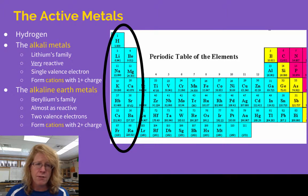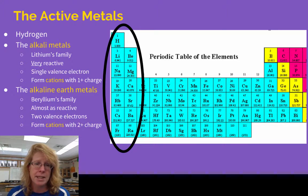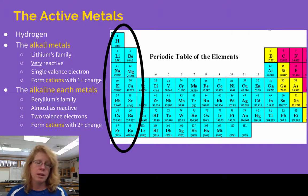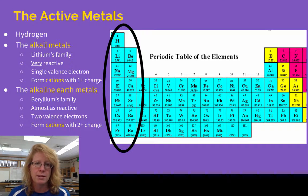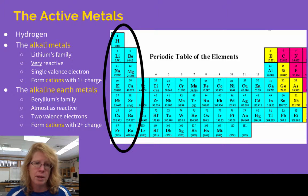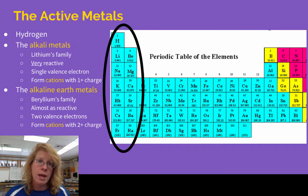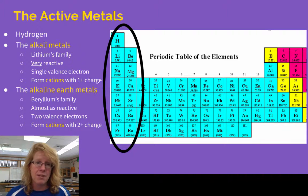The first family — lithium on down — is called the alkali metals. These guys have only one atom in their outside valence shell, so they tend to get rid of it and form cations. They're super reactive because they just have that one extra electron they want to get rid of — they easily give it away.